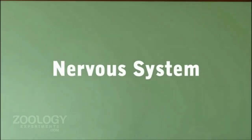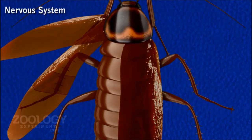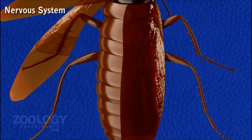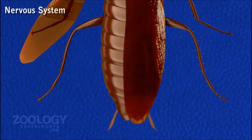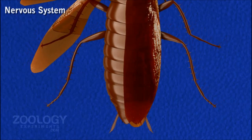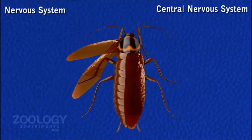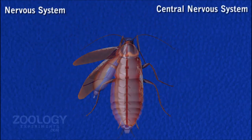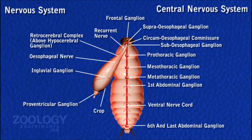Nervous System. The nervous system comprises the central, peripheral and sympathetic nervous system. The Central Nervous System consists of the brain and ventral nerve cord with its ganglia.